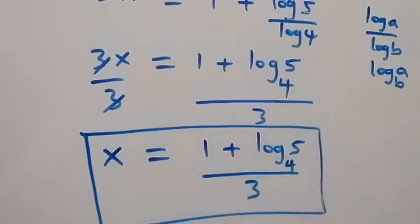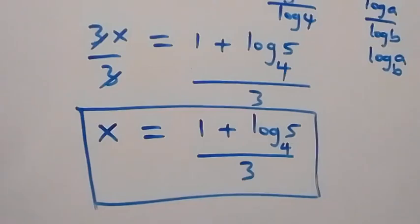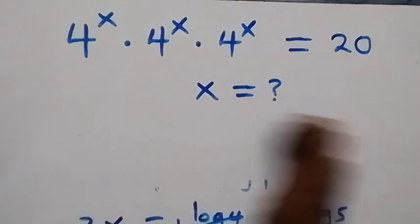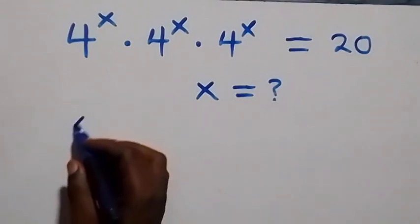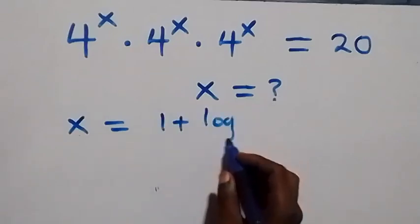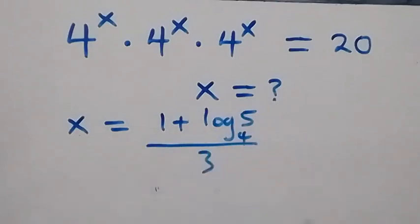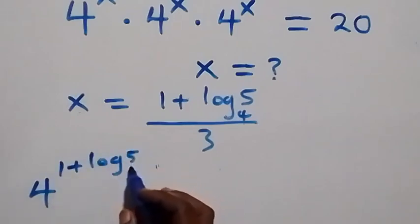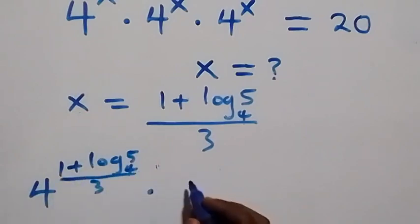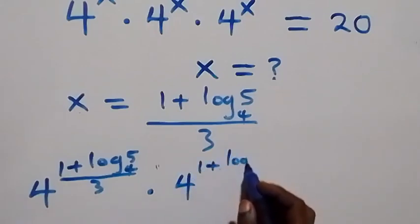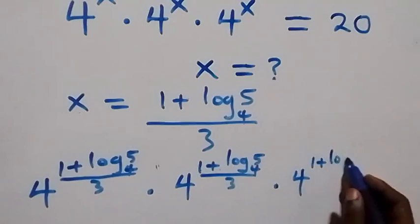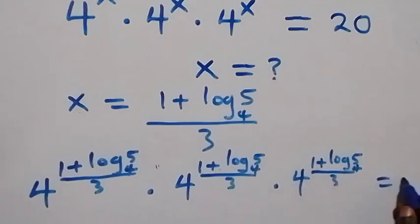So the value of x in this given problem is x equals (1 plus log base 4 of 5) over 3. We can check to confirm if this satisfies the given problem by putting this value of x back. The equation becomes 4 raised to power (1 plus log base 4 of 5) over 3, times 4 raised to the same power, times 4 raised to the same power, equals 20.